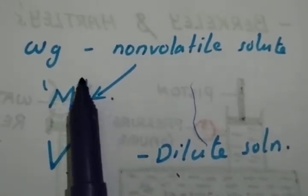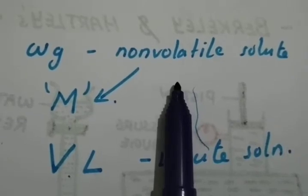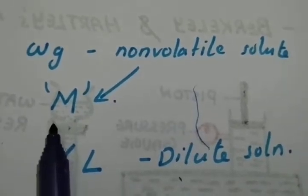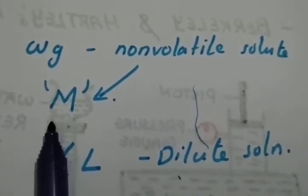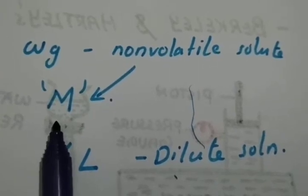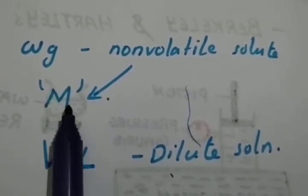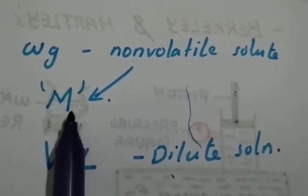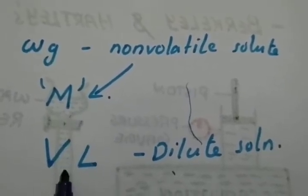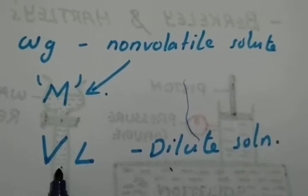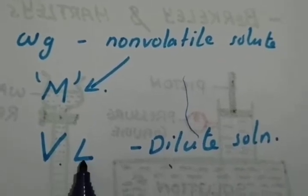Suppose W gram of a non-volatile solute whose molar mass M is to be determined. W gram of non-volatile solute whose molar mass M is to be determined, which is dissolved in a suitable solvent to get V liters of a dilute solution.